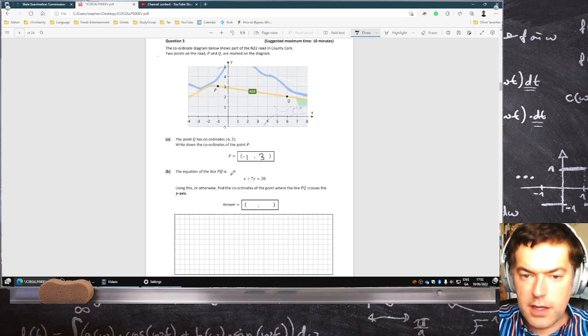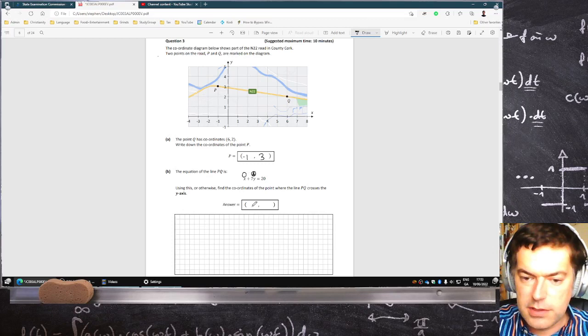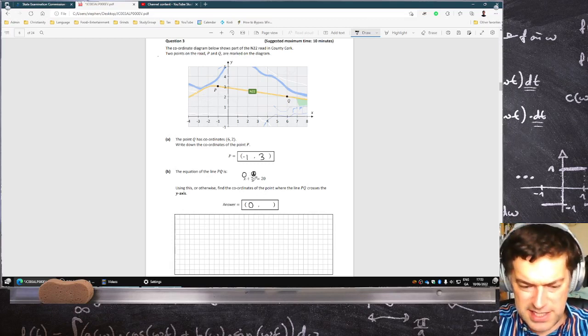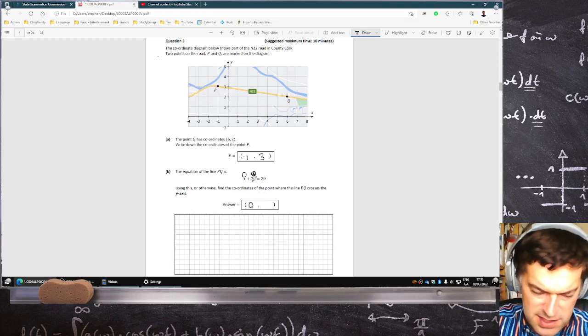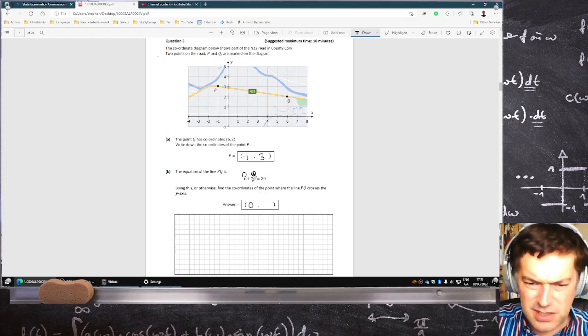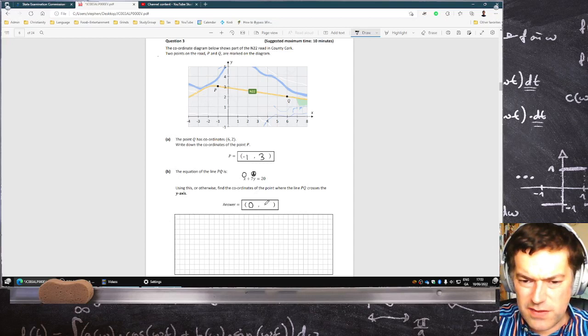The equation of the line PQ is that. Use this or otherwise find the coordinate of the point where PQ crosses the Y axis. So you just have to put Y equal to 0, sorry, I mean to say put X equal to 0 to find out where it crosses the Y axis. So it's going to be 20 divided by 7. That's a decimal, so I'll leave it as 20 over 7, I guess, since it doesn't say anything about decimals.